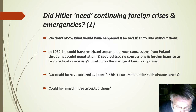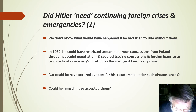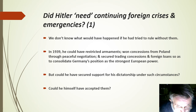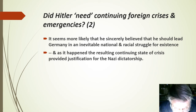The argument that Hitler needed continuing foreign crises and emergencies can't be conclusively refuted — we don't know what would have happened if he tried to rule without them. In 1939 he could have restricted armaments, won concessions from Poland through peaceful negotiation, and secured trading concessions and foreign loans, so as to consolidate Germany's position as the strongest European power. But could he have secured support for his dictatorship under such circumstances? It seems more likely that he sincerely believed he should lead Germany in an inevitable national and racial struggle for existence, and the resulting continuing state of crisis provided justification for the Nazi dictatorship.